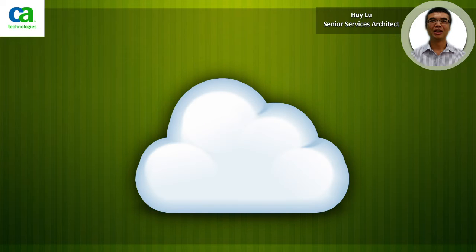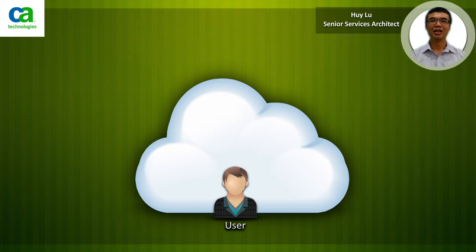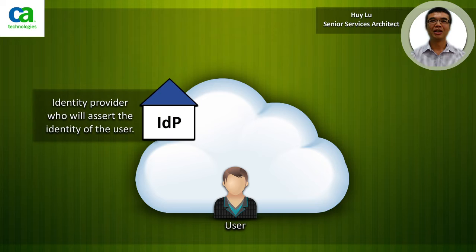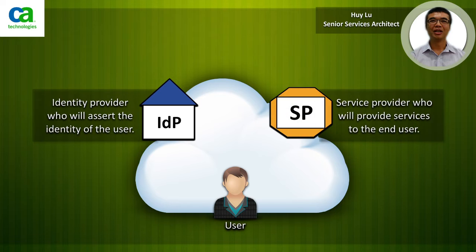Let's have a look at the various entities involved. We have a user who is trying to access a service over the web. Then there is an identity provider who will assert the identity of the user, and a service provider who will provide the service to the end user. The terminology such as identity provider and service provider will change with the various different standards, however the concepts will remain the same.